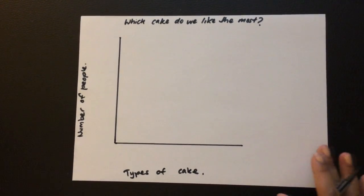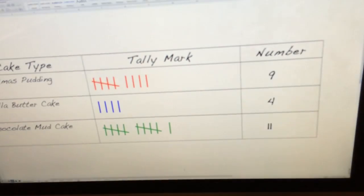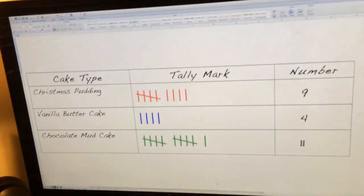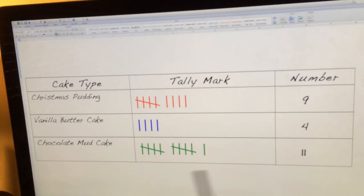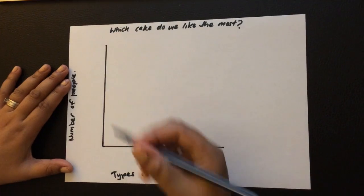Now if we have a look at our tally mark sheet, so my one is on the computer, we need to look for the biggest number. So the biggest number is 11. This would mean the top number would be 11.